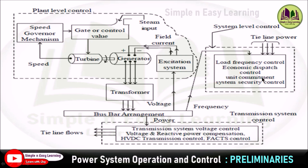The next one is unit commitment. Economic dispatch gives the optimum schedule for one particular load on the system, but the unit commitment problem is used to find the shutdown and commissioning rules so that the total cost of generation for a given period of time is minimum. The load demand on the power system varies throughout the day and reaches different peak values from one day to another. To meet the varying load demand, different combinations of generators are operated. Power system engineers need to know the sequence of generating units to be operated, considering minimum cost during increase and decrease in load demand.